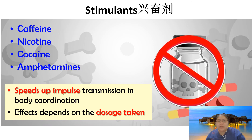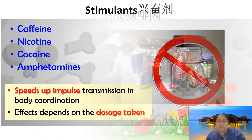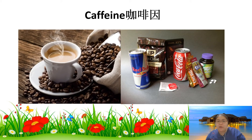The second type, stimulants, makes you excited. Examples include caffeine, nicotine, cocaine, and amphetamines. They speed up the impulse transmission in your body coordination, making everything faster and increasing alertness. The effect depends on the dosage — the more you take, the higher the effect. For example, coffee contains caffeine; after drinking it you feel less sleepy and more motivated to study or work.